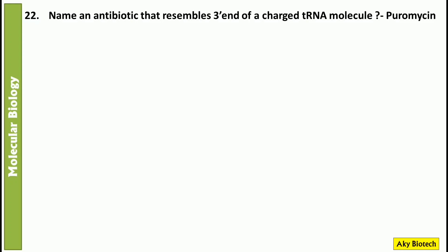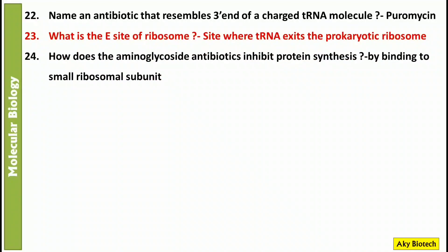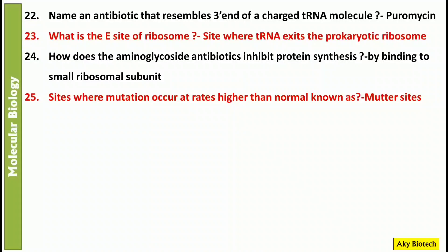Question 23: What is the E site of the ribosome? The E site is where tRNA exits the prokaryotic ribosome. Question 24: How do aminoglycoside antibiotics inhibit protein synthesis? They inhibit protein synthesis by binding to the small ribosomal subunit. Question 25: Sites where mutations occur at rates higher than normal are known as mutational hot spots.